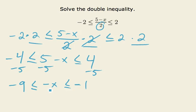Now I have this negative sign. Let's multiply all three sides by a negative one. Multiplying or dividing by a negative number, I have to change the direction of those inequalities.